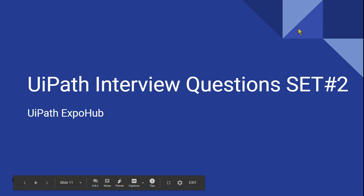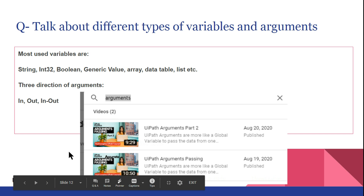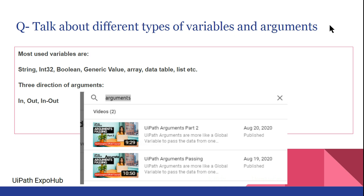The very first question you might encounter during your interview: talk about different types of variables and arguments. This is a very basic question. Remember, during the interview, the way you answer matters — the panelists will know if you've only read somewhere and are not practically aware. So you must know this practically, and during this class I'm going to show you a couple of demos.